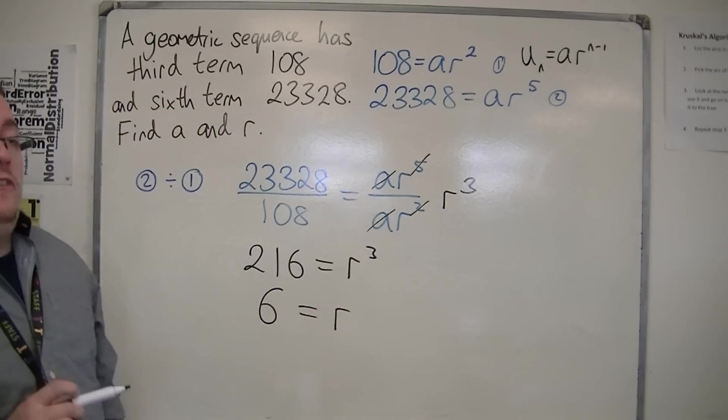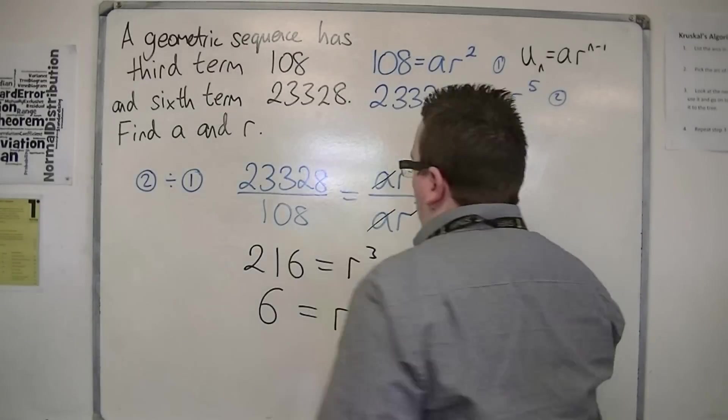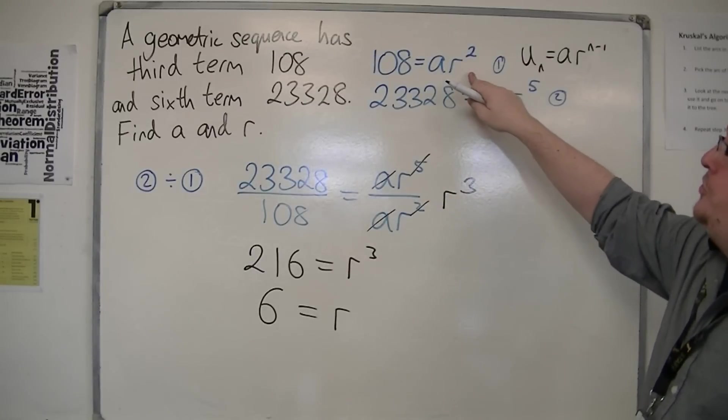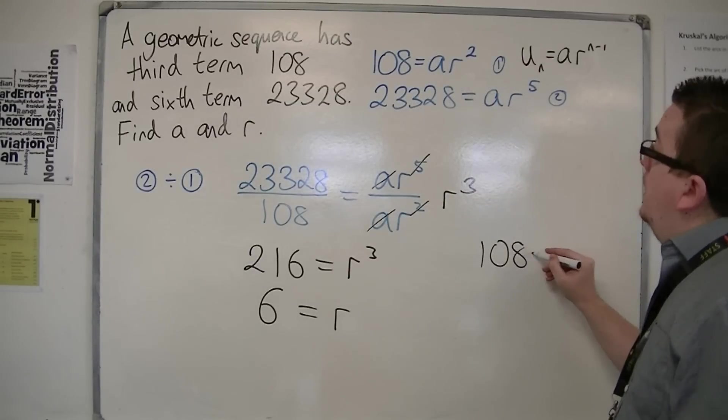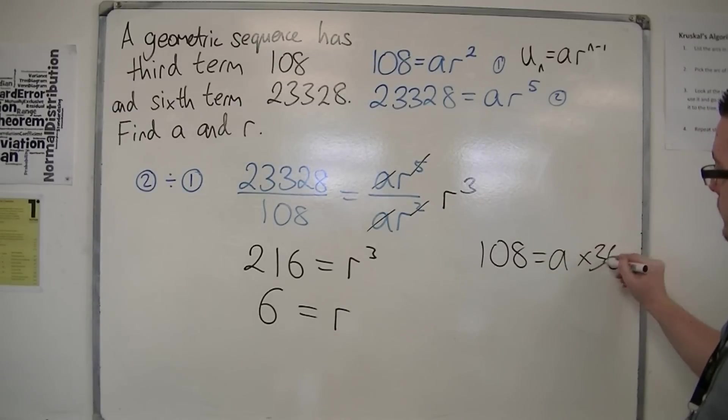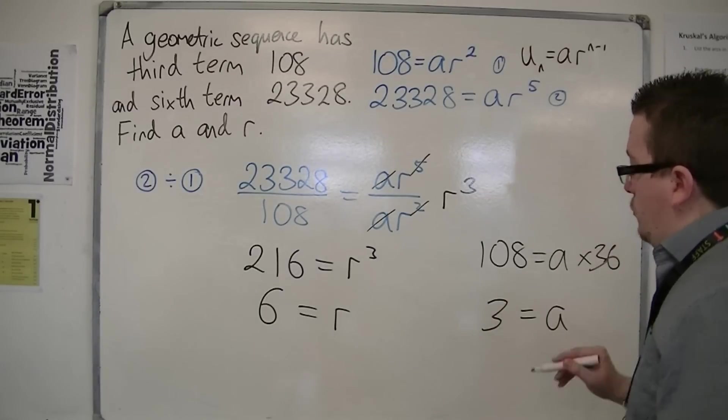So it just leaves me now to find out what A was. I'm going to substitute that into one of the two equations, the first one. So 108 = A × R^2, so A × 36.